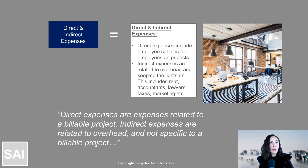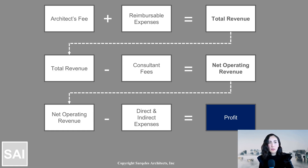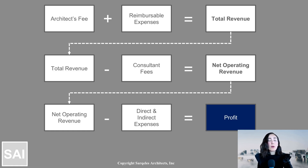Indirect expenses can also include marketing, lawyers, taxes, rent, leases, equipment, and more. When we take the net operating revenue and subtract all those indirect and direct expenses, the firm has the next keyword in a P&L statement: profit. The P&L statement — although it has those three key ingredients — the categories under those three terms can be organized however a firm wishes. Every P&L will have revenue, expenses, and profit, but the subcategories will be organized differently depending on the size of the firm, the types of projects, and how they write contracts.